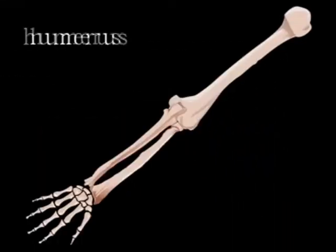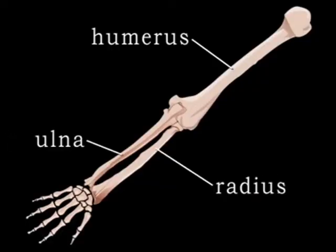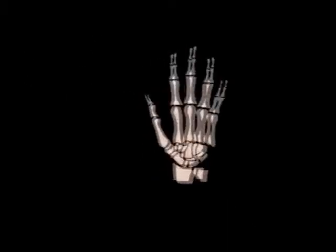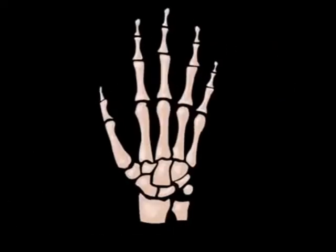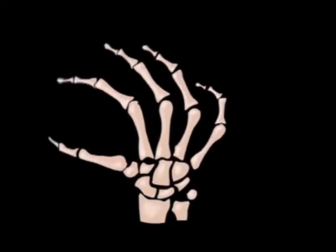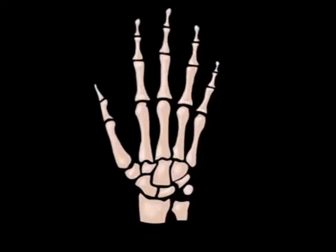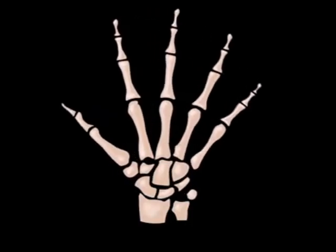The arm itself is composed of the humerus, or upper arm, and the radius and ulna of the forearm, plus the wrist and hand, which consists of 27 separate bones. Because of this large number of small bones, our hands are capable of more movement than any other part of our body.